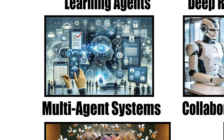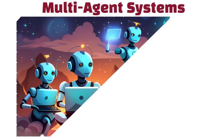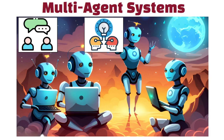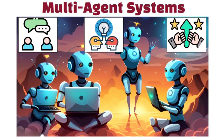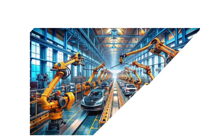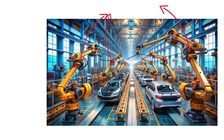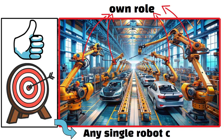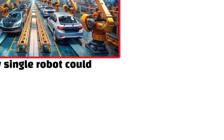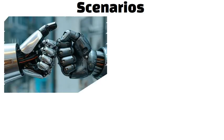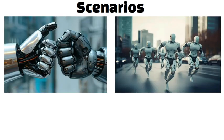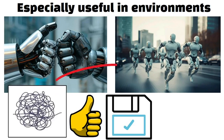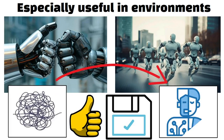In multi-agent systems, many AI agents work together to solve problems. These agents can communicate, share information, and even compete with each other. Think of a team of robots working on assembling a car in a factory — each robot has its own role, but together they achieve a task more efficiently than any single robot could. These systems are used in scenarios where cooperation or competition between agents can lead to better outcomes, and they are especially useful in environments that are too complex for one agent to manage alone.